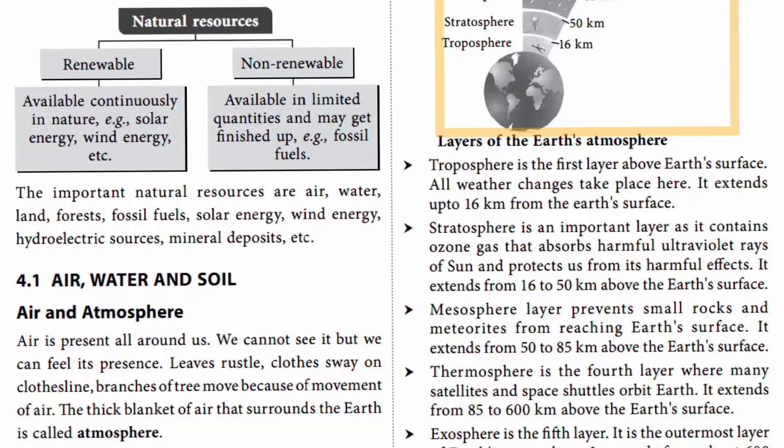The troposphere is the first layer above the earth's surface and all the weather changes take place here. It extends up to 16 kilometers from the earth's surface. The stratosphere is an important layer as it contains ozone, which absorbs the harmful ultraviolet rays of the sun and protects the earth from their harmful effects.